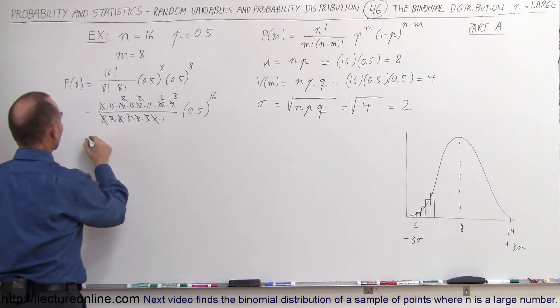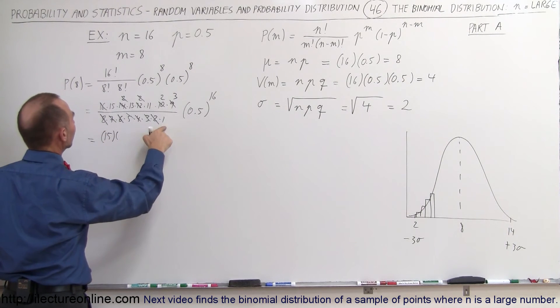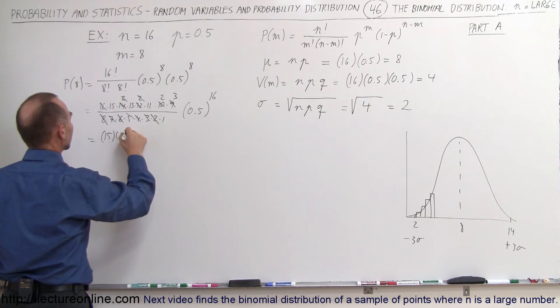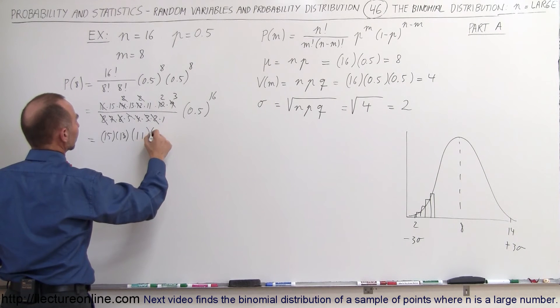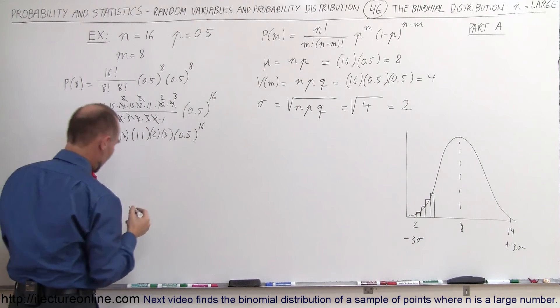Now I'm ready to simplify it a little bit more. We have 15 multiplied times everything in the denominator is cancelled, so we have a 13, and an 11, and a 2 and a 3, and then times 0.5 raised to the 16th power.